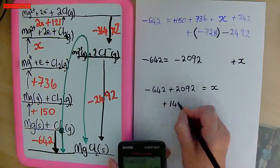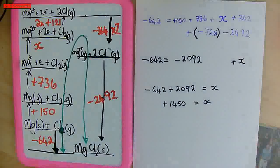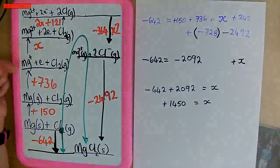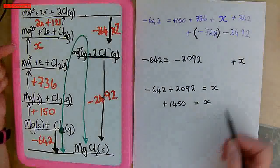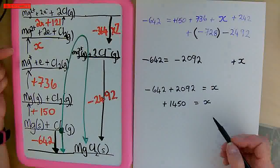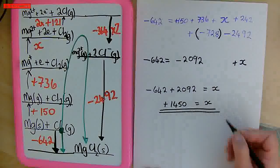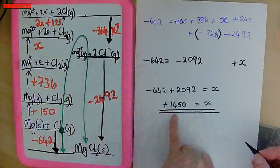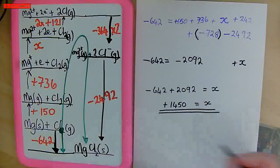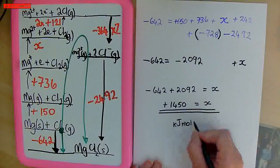We can do a quick check — this is an upward arrow on the diagram, so it has to be positive, and we've got a positive number, so the rearranging is correct. The value for the second ionization energy of magnesium is +1450 kJ mol⁻¹.